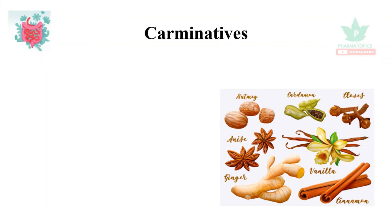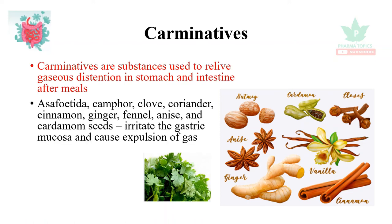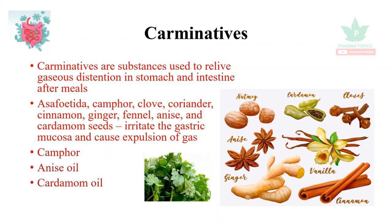Carminatives are substances used to relieve gaseous distension in the stomach, improve digestion, and relieve gas in the intestine after meals. Examples include camphor, clove, coriander, cinnamon, ginger, fennel, anise, and cardamom seeds. They irritate the gastric mucosa and cause expulsion of gas. Widely used ones include camphor, anise oil, and cardamom oil.